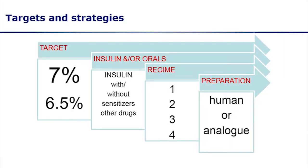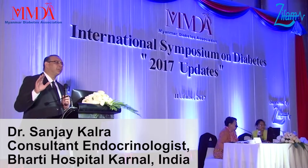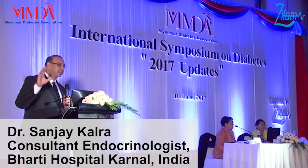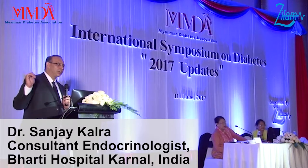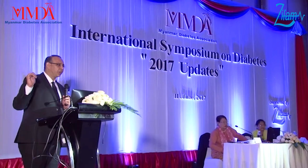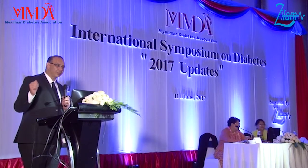The first step is to define the target. In diabetes care, our target is an HbA1c of 7 without causing hypoglycemia and without causing complications. Once we have decided our target in a particular patient, we decide our strategy. For one patient, we may decide to use only lifestyle modification. For another, it may be oral drugs. For another, it may be insulin. And for yet another, it may be insulin plus oral drugs.